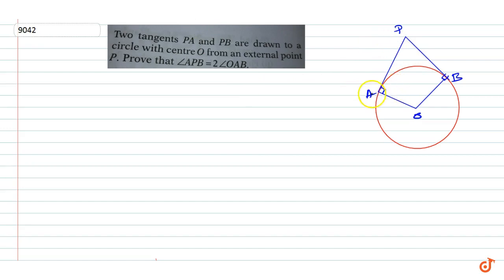Here we have, this is a quadrilateral. And this angle is 90 degree, this angle is also 90 degree. So we can write,